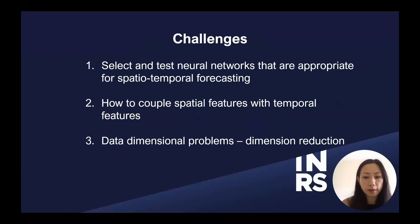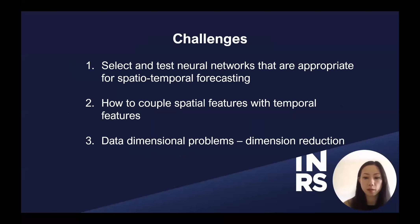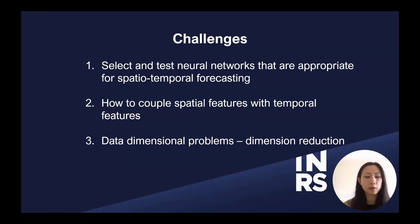We will address some challenges as we go through our workflow. The first challenge was to select a neural network appropriate for our spatial-temporal forecasting, since not all networks are suitable. The second challenge is to capture spatial and temporal features — we have different types of data and need to incorporate them together. Our third challenge was data dimensions: we have multiple wells with multiple parameters, creating a dimensionality problem that we need to reduce to train our neural networks.